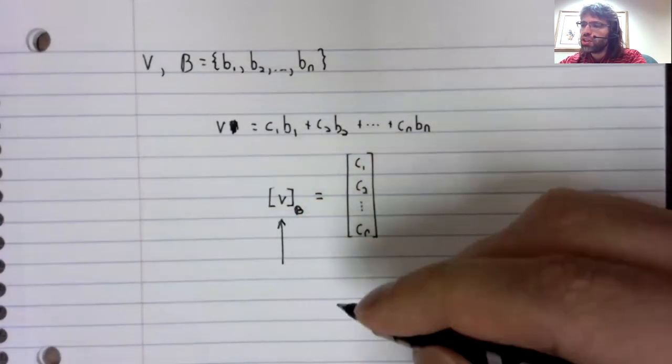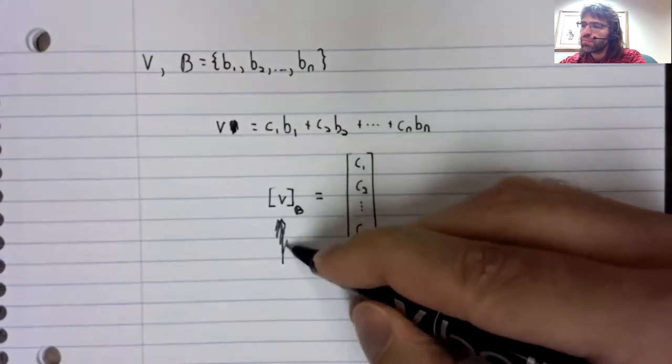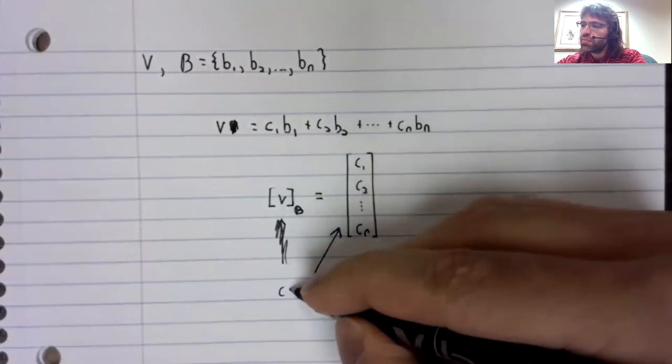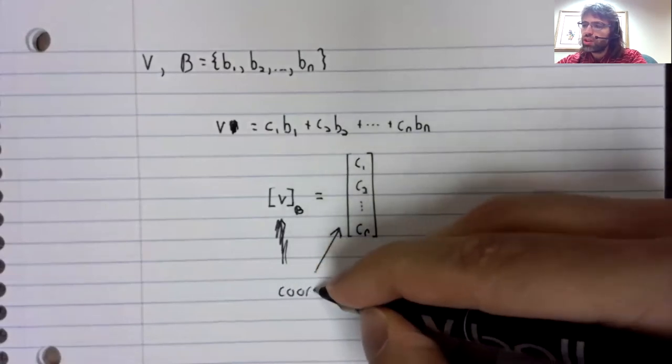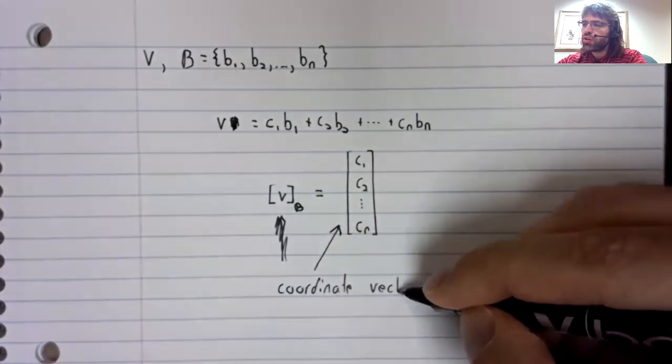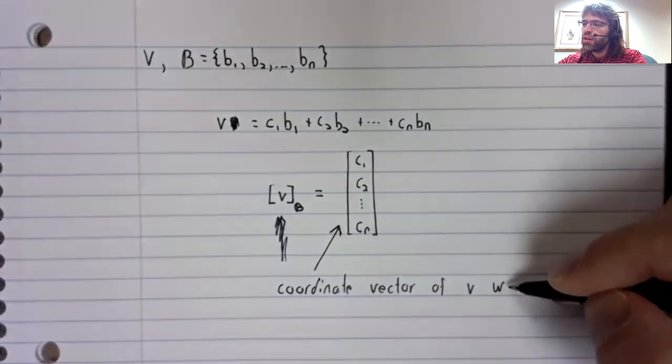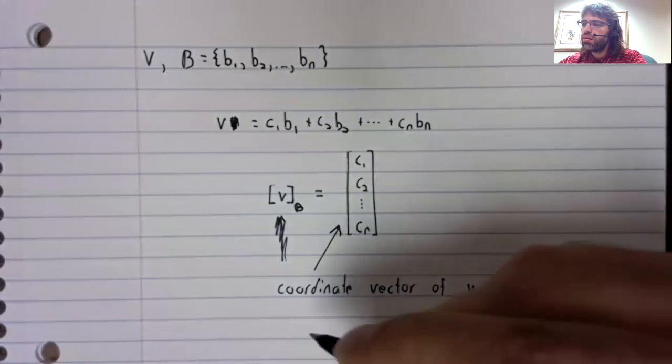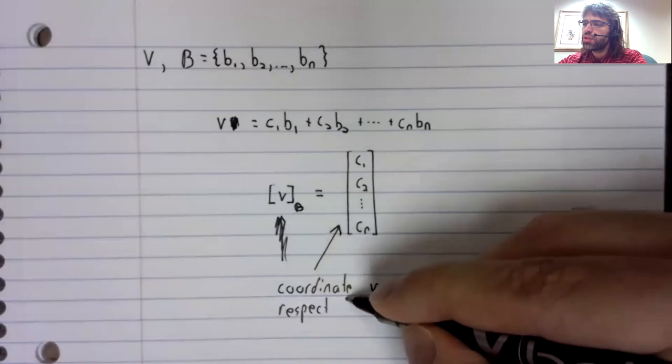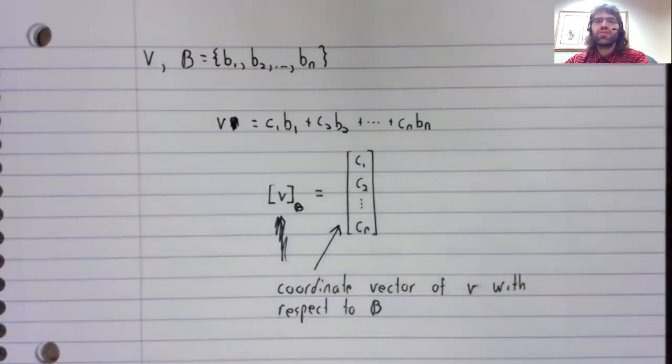And our terminology is that this is the coordinate vector of V with respect to this basis.